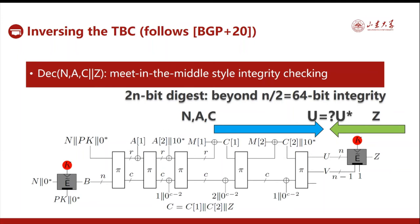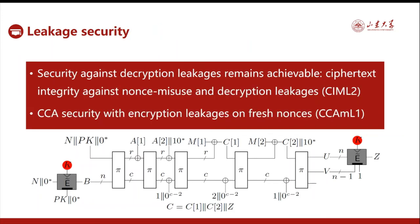This follows our previous CHESS design. About its leakage security: some security against decryption leakages remains achievable even with only one path — that is, ciphertext integrity against nonce misuse and decryption leakages. This model is named CIML2 in our related papers. The reason is that the adversary could fix the nonce to the decryption oracle and recover the internal states via leakages. But then the AE collapses to a hash-then-MAC scheme — the duplex becomes a hash and the TBC becomes a MAC function. So integrity remains ensured as long as the tweakable block cipher remains secure.